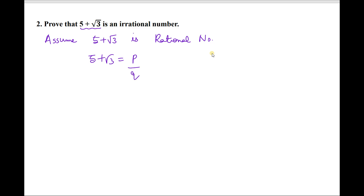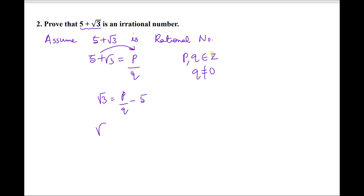You should assume the given number as a rational number. A rational number is of the form P/Q, where P and Q belong to Z — that means P and Q are integers and Q ≠ 0. Now keep √3 on the left and shift 5 to the right-hand side. We get root 3 = (P − 5Q)/Q by the LCM/butterfly method.